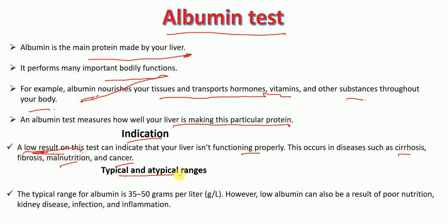The typical range of albumin is 30 to 35 grams per liter, though this depends on the lab. Low albumin can also be a result of poor nutrition, kidney disease, infection, and inflammation. In summary, albumin level is lower than the standard level in cases of liver problems.